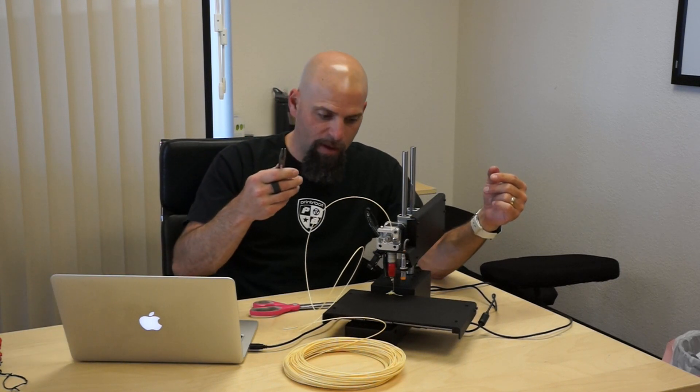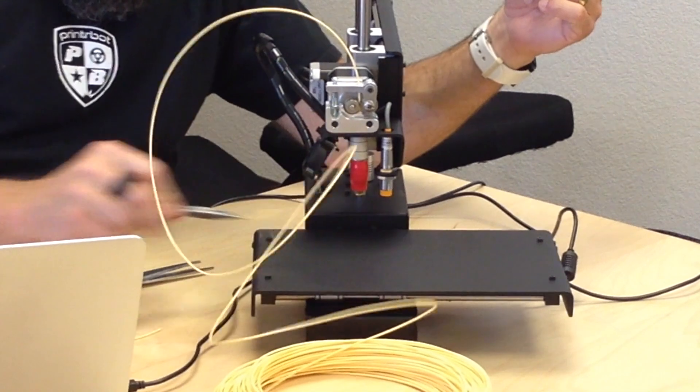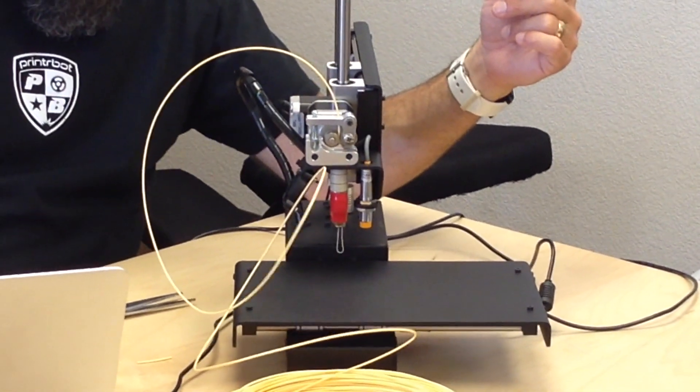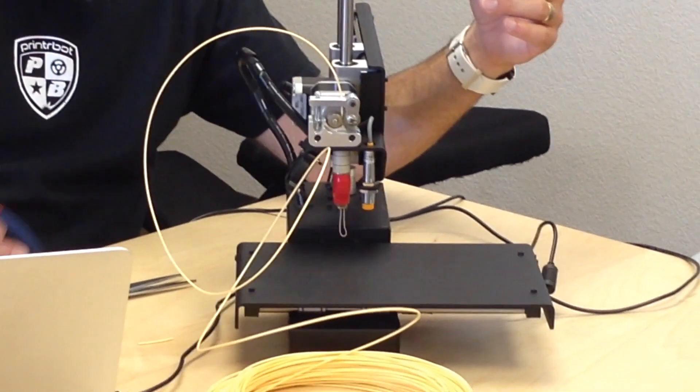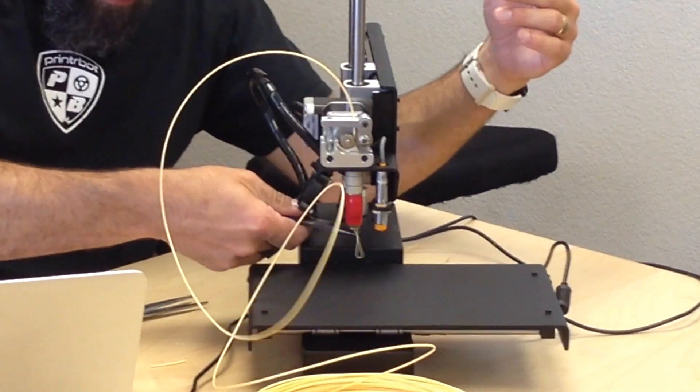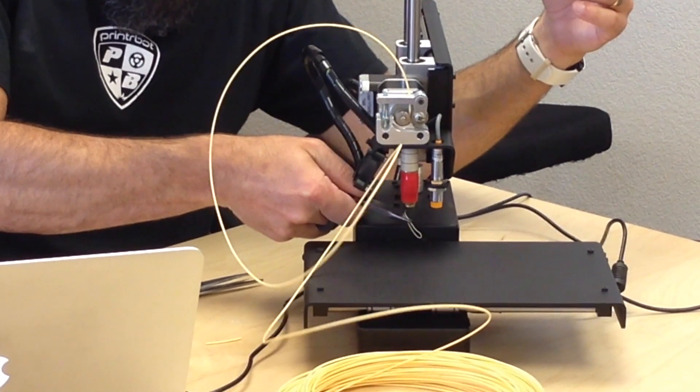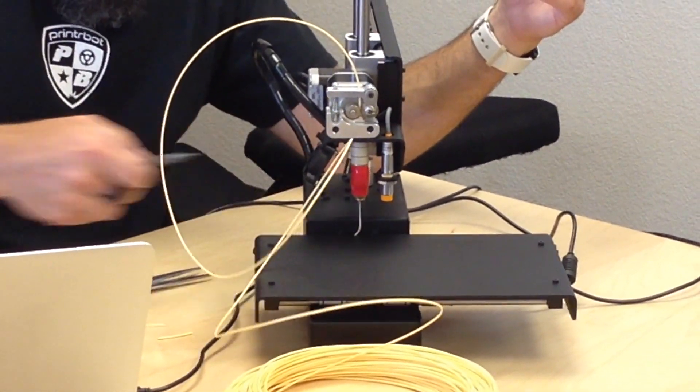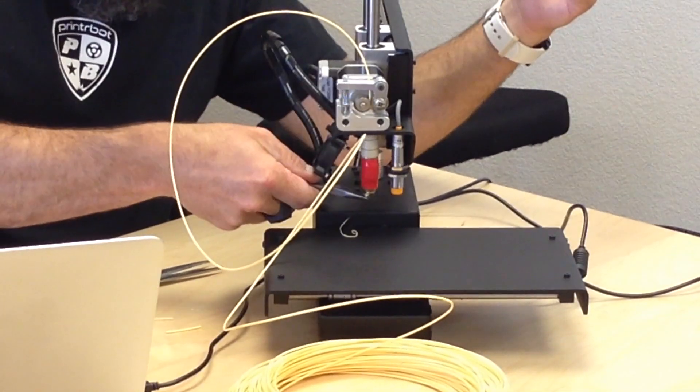Now, important point: don't grab that with your hand. I've got a little pair of pliers. You can use tweezers. Let's see that again. And when it comes out, it's plastic and it's sticky, right? So it might grab onto the end of the nozzle. Nothing to worry about. I just kind of coax it away a little bit or take it off there. Sometimes it bunches up, but it's working.